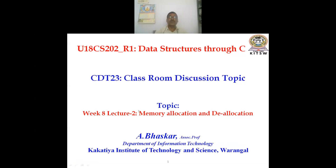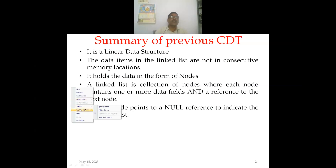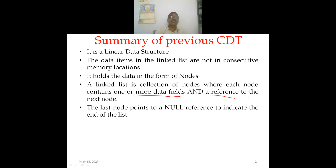This is a WikiIT Lecture 2: Memory Allocation and Deallocation for Single Linked List. Summary of the previous CDD: we introduced basic terminology related to linked lists. A linked list is a linear data structure where data items are not stored in consecutive memory locations. It holds data in the form of nodes — a collection of nodes where each node contains one or more data fields and a pointer to the next node, with the last node pointing to null.